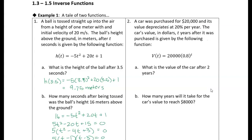The first question asks for the value of the car after two years. v(2) = 20,000 × 0.8², and putting that into a calculator gives $12,800. So that's our value after two years.